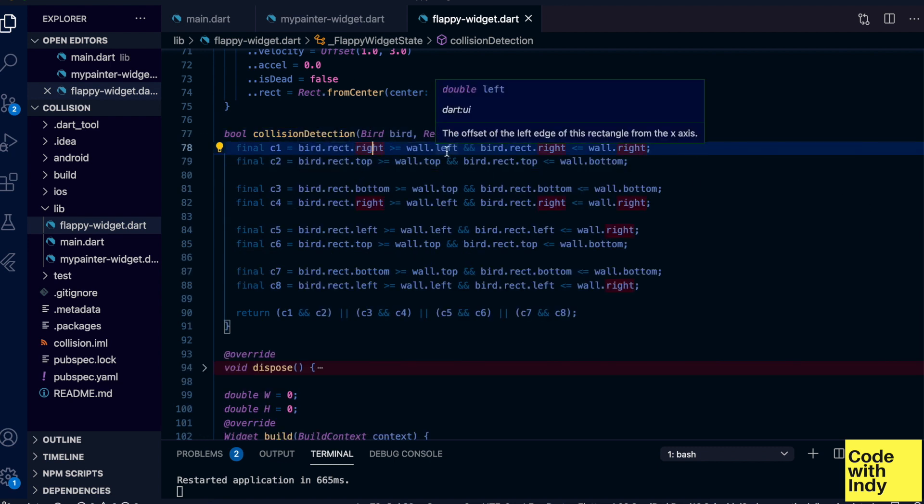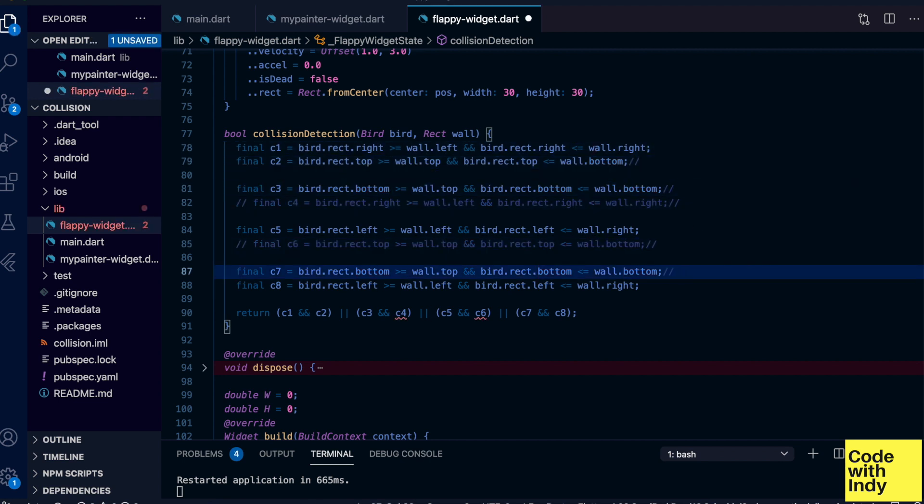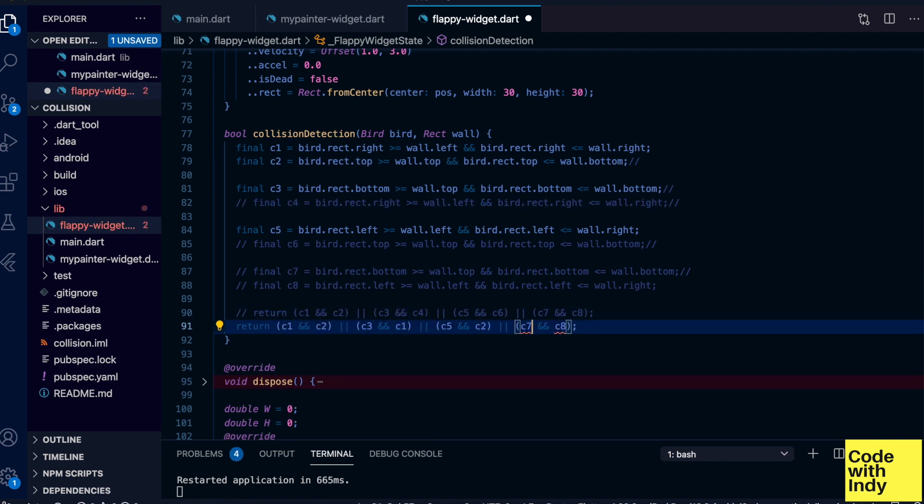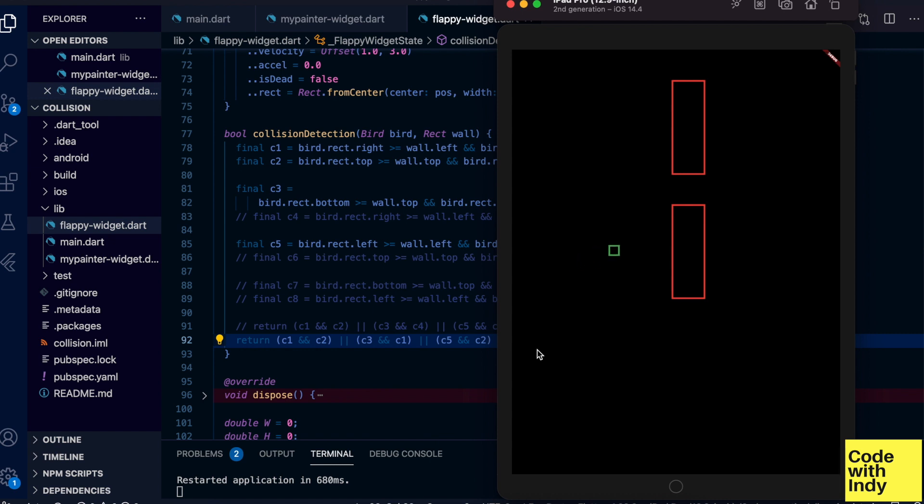Now, let's look at the collision detection function. Here are the eight checks we discussed earlier, implemented as you can see. Some of these checks are redundant, so let's remove them. Now, let's give it a go again. Still works as expected.